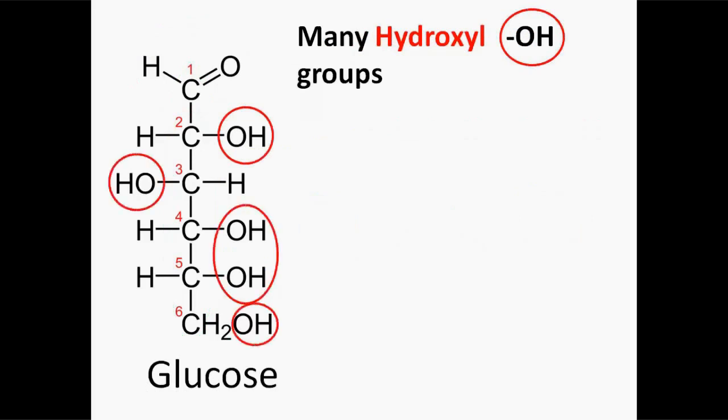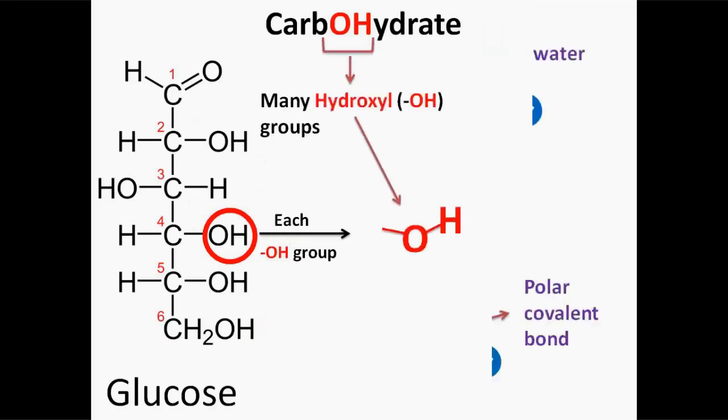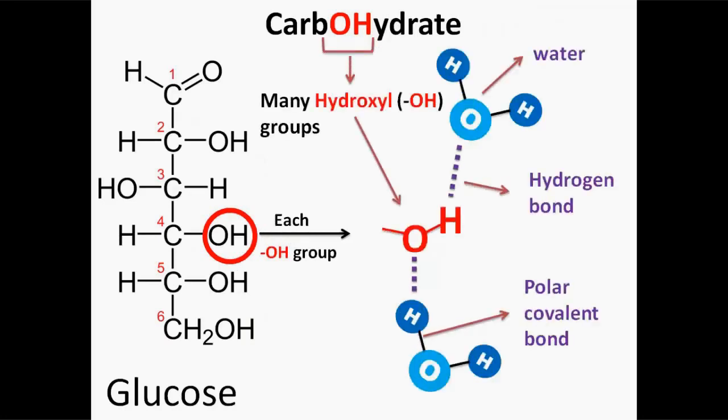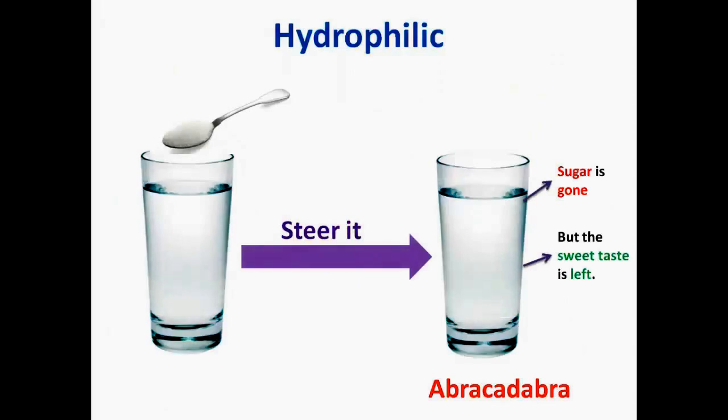They have many hydroxyl or OH groups attached to its structure. And from episode 4, you know first of all that carbohydrates are polar molecules. And you also know that they can form hydrogen bonds. With these two information, we can deduce that they dissolve in polar solvents like water, and they can form hydrogen bonds with water molecules. So they love water and they mix with water, making them hydrophilic.